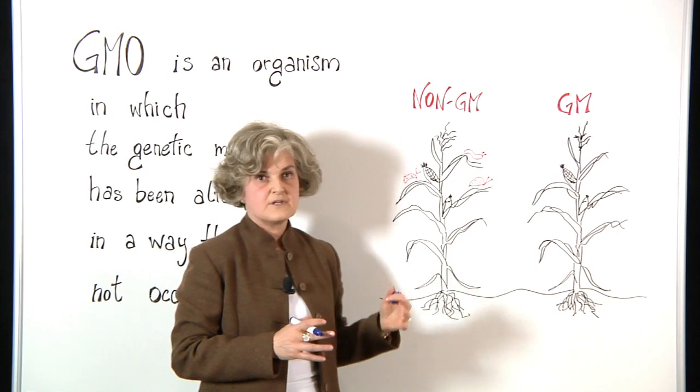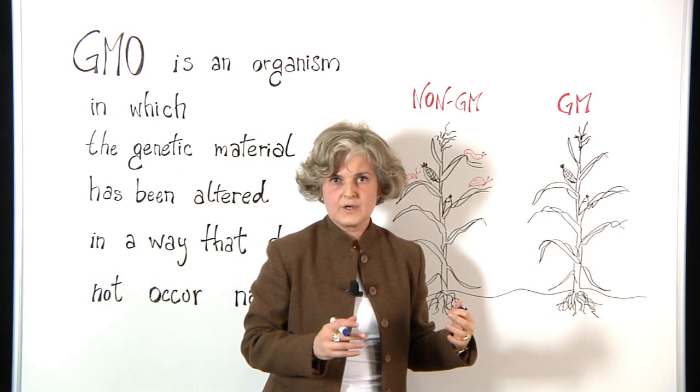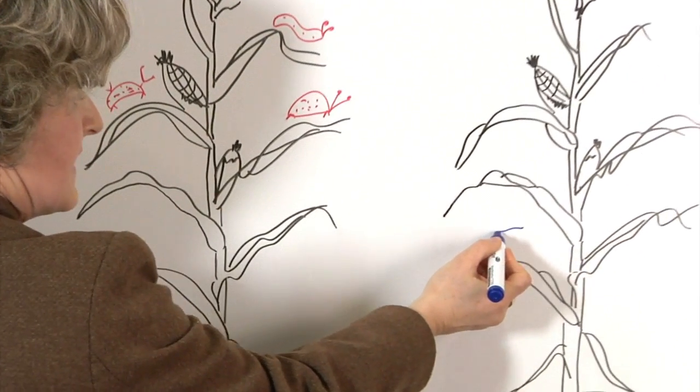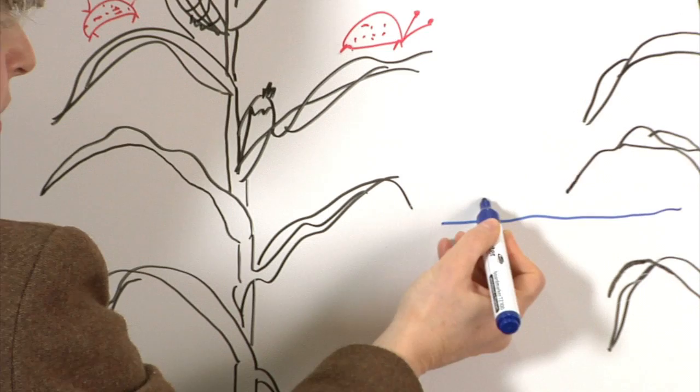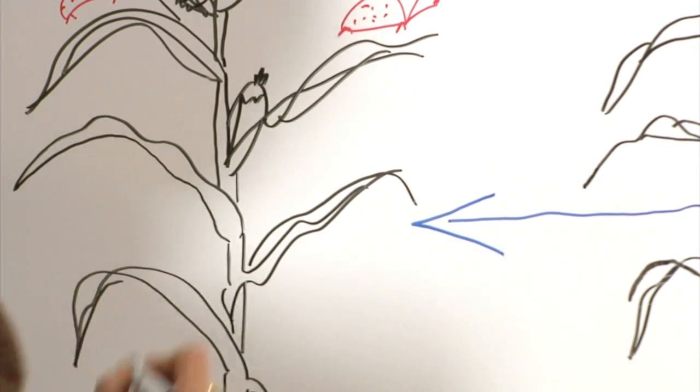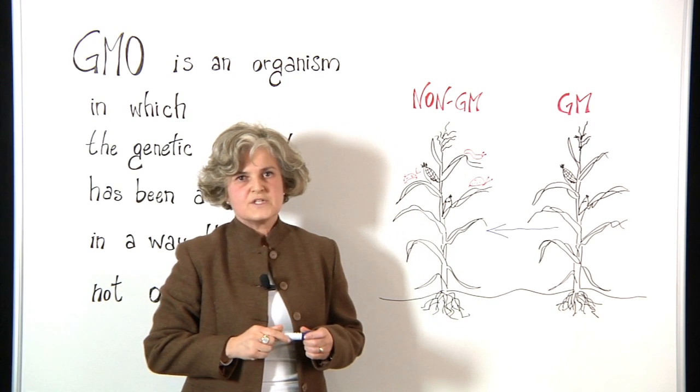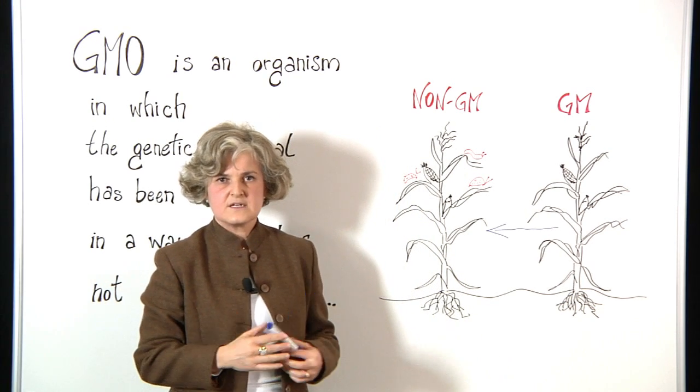Now, the question is how does EFSA do this assessment? Using a comparative approach, which is basically a comparison between the GM plant and its conventional counterpart. We do that by asking a whole series of questions.